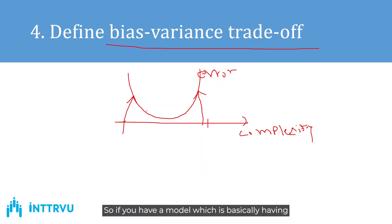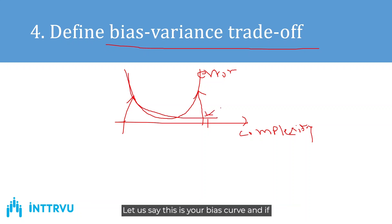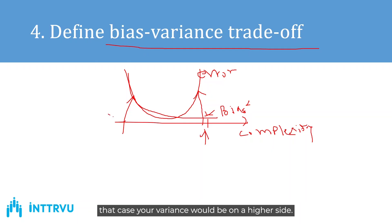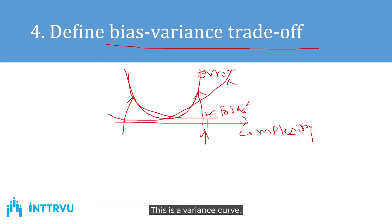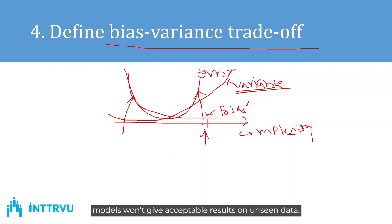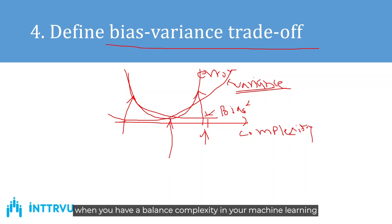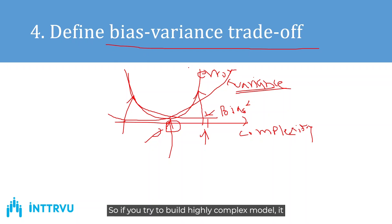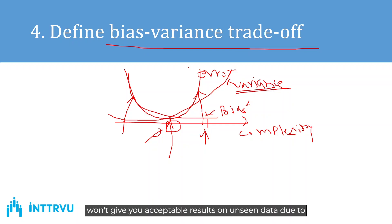If a model has high complexity, bias would be low but variance would be on the higher side. When a model is highly complex, that can result in overfitting, and those models won't give acceptable results on unseen data. You are trying to find an optimal model with balanced bias and variance, which comes from having balanced complexity. Building a highly complex model may give good results on training data but won't give acceptable results on unseen data due to overfitting.